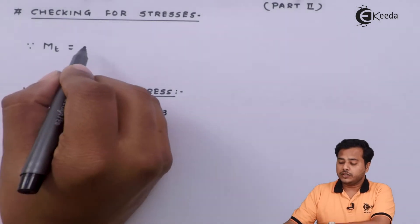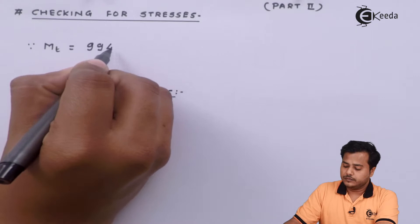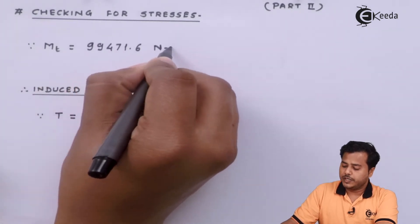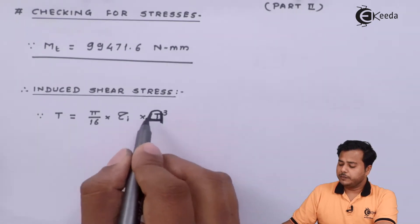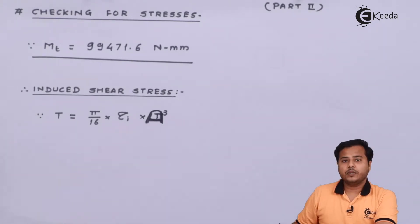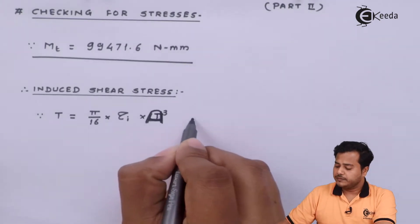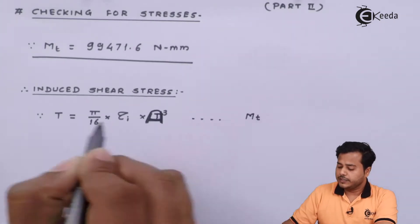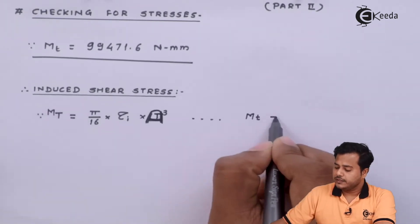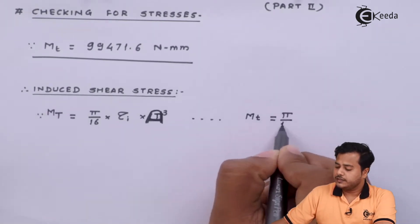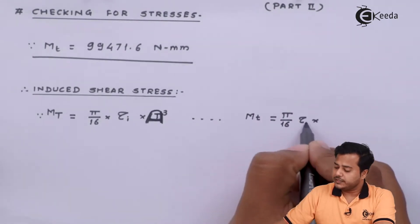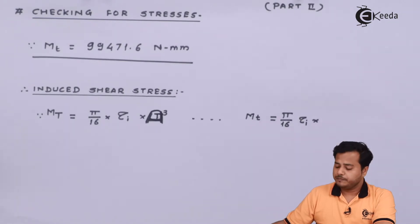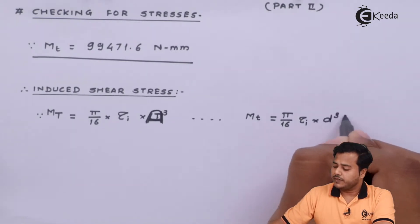We know that the torque to be transmitted is in Newton mm, as figured out in the very first slide. The actual formula is: MT is given by (π/16) × τ_induced × d³, where d is the shaft diameter.